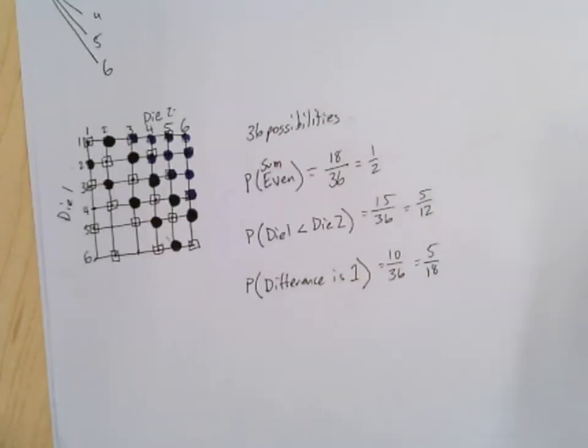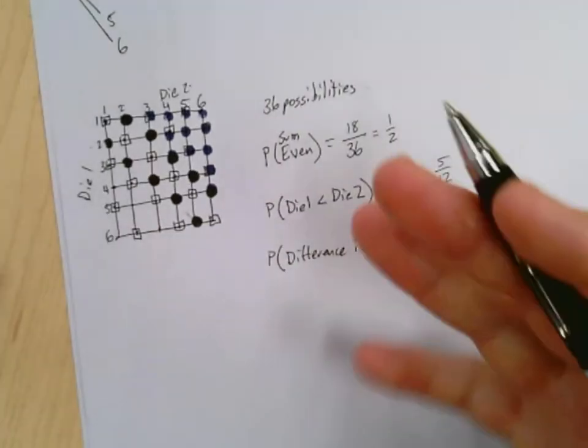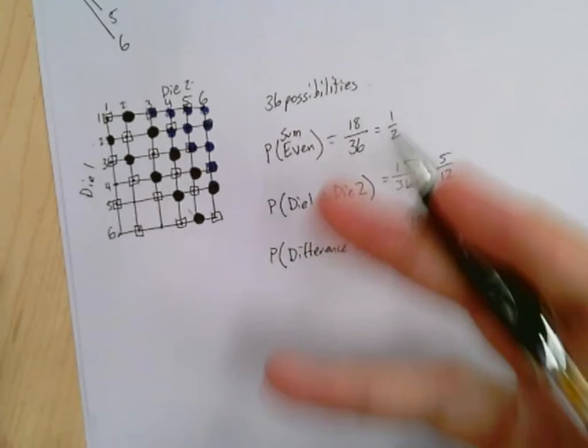Alright? So, hopefully that gets you started. Let me just show you one more. I did mention, well, what if I had a coin and a die? Just so you see one that's a little bit different.